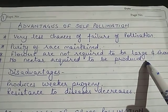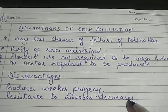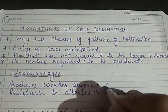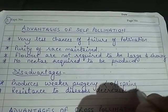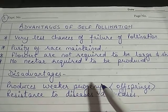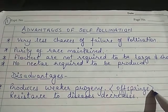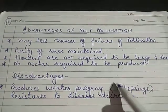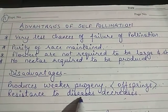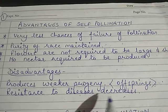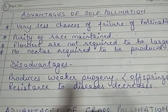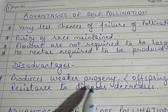However, there are certain disadvantages of self-pollination. It produces weaker progeny — meaning weaker offspring. Every time the same parent produces more offspring, they become weaker. Resistance to diseases decreases because if a parent plant carries some disease, those diseases continuously spread among the offspring as there is no external character to provide resistance.